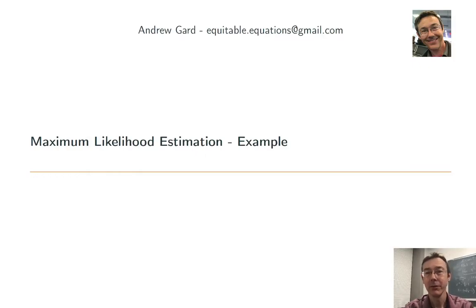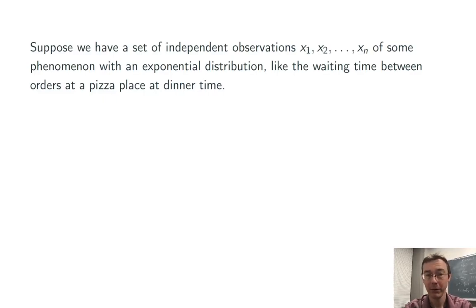Hey everybody. Today we're doing an example of maximum likelihood estimation. Suppose we have a bunch of observations, x1 up to xn, of some random variable that has an exponential distribution. Like, maybe we're measuring waiting times between orders to a pizza place at a specific time of day.